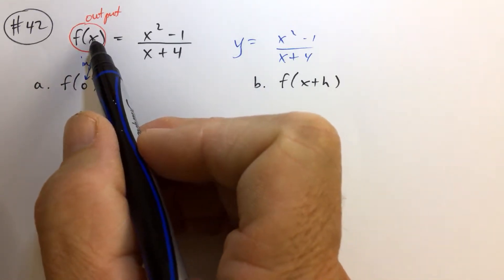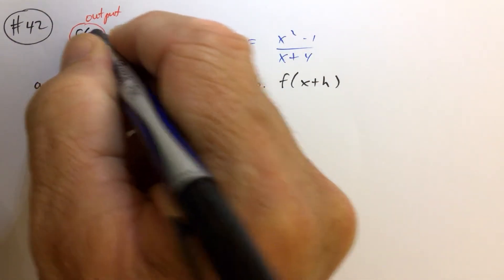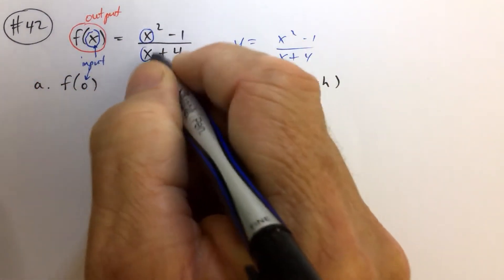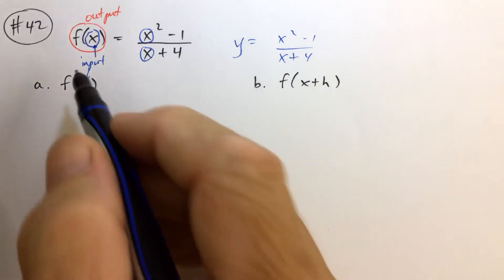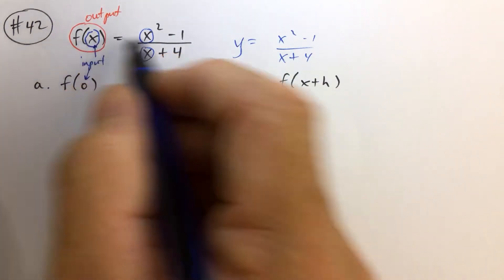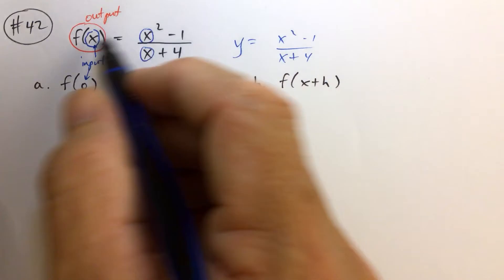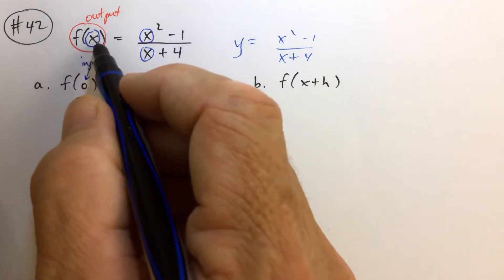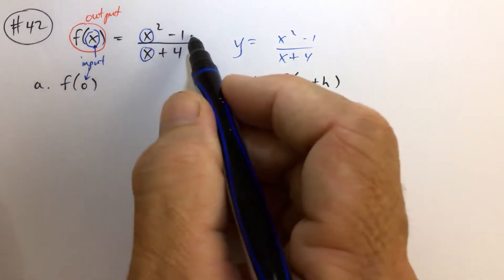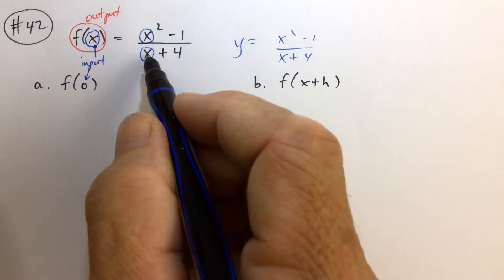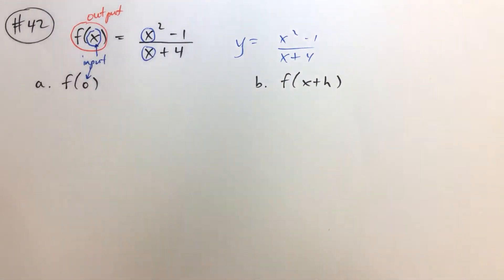So this x right here is the same as that x. So that x right there is the same as that x and the same as that x. Meaning that wherever you see an x, whatever you give the function to be the input, you're going to put right there, you're going to square it, you're going to subtract 1, you're going to take that and you're going to divide it by that same number plus 4.